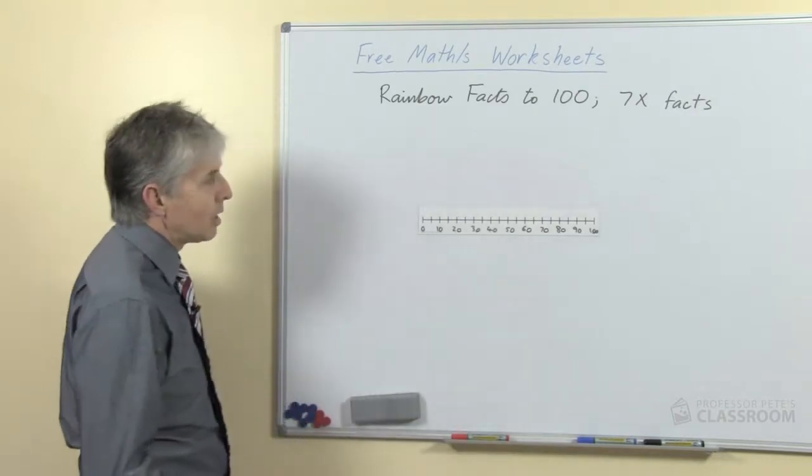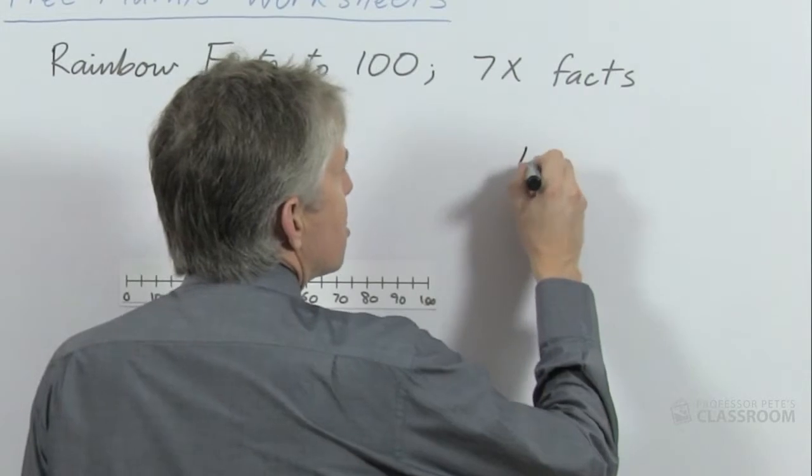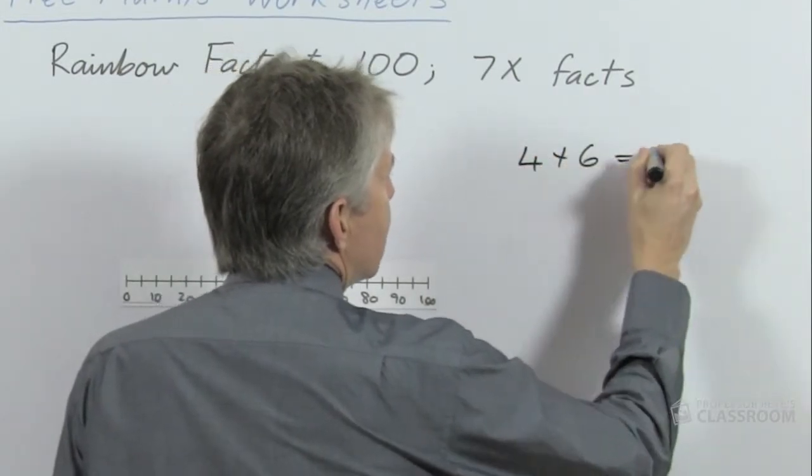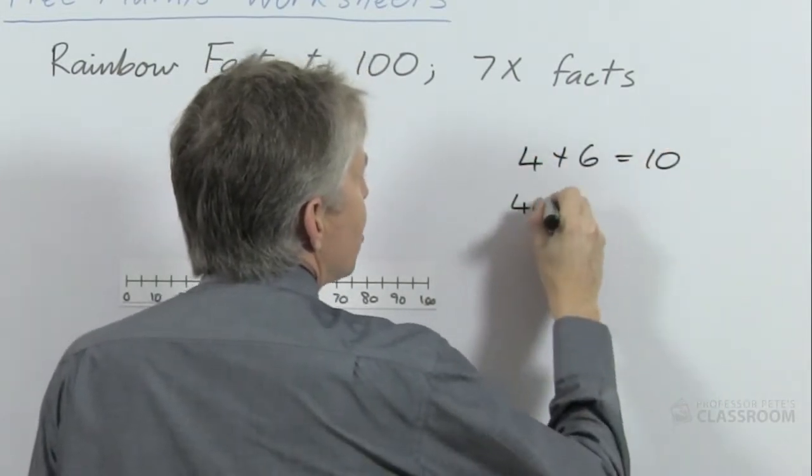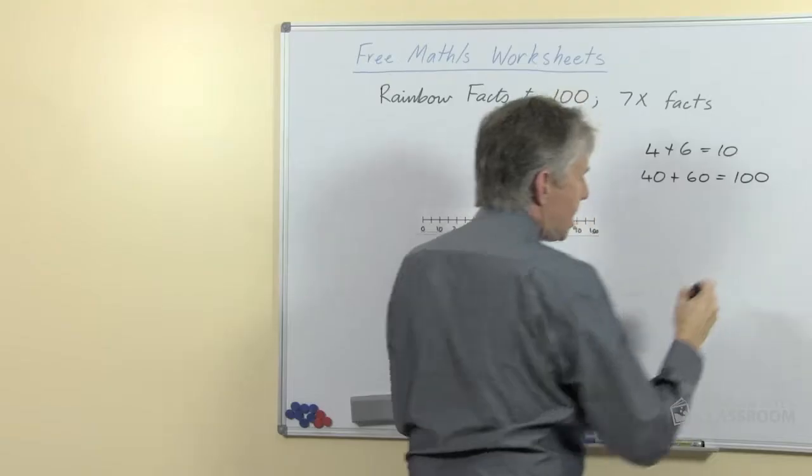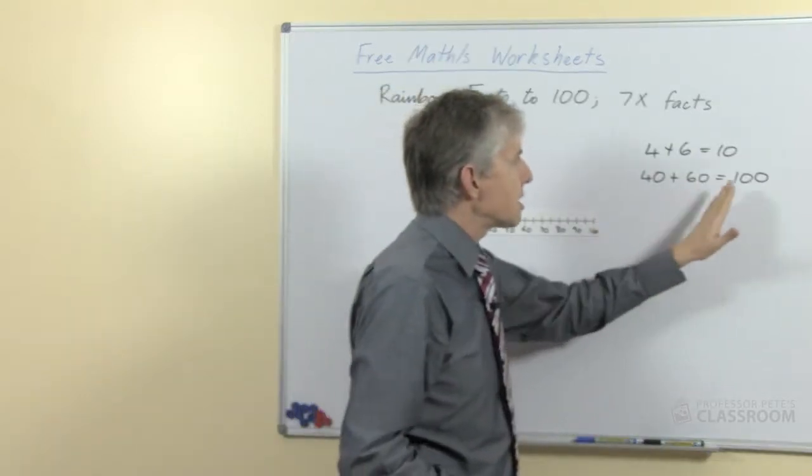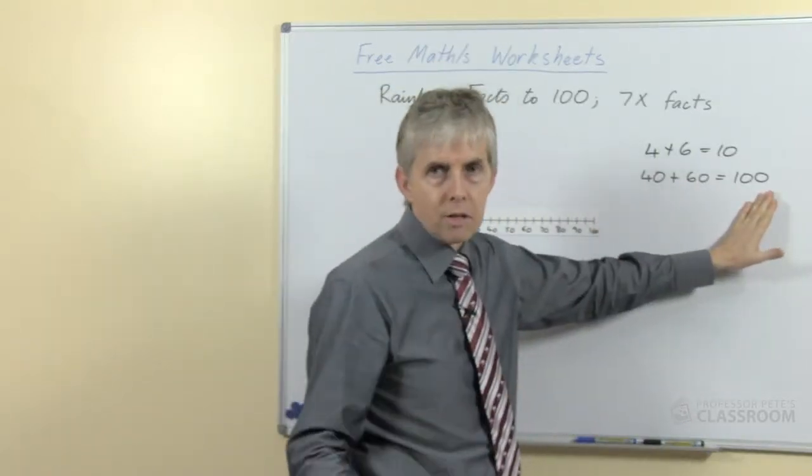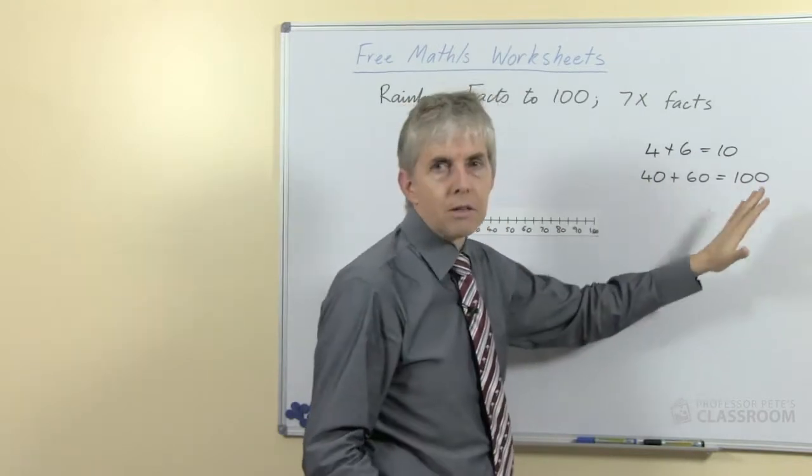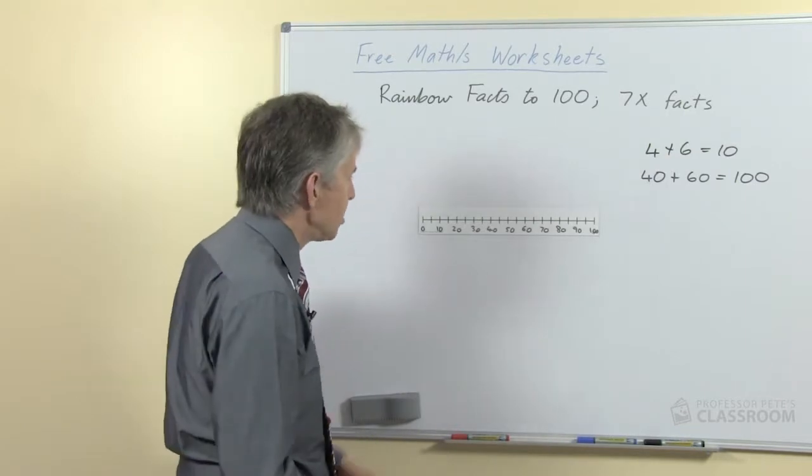So the first one is a pretty easy one and that's looking at multiples of 10. So just as the students know, for example, that 4 plus 6 equals 10, they should be able to extend that knowledge once they're familiar with the multiples of 10 and the number 100, that 4 tens and 6 tens is 10 tens or 100, and so that's a number fact that they should pretty easily be familiar with.